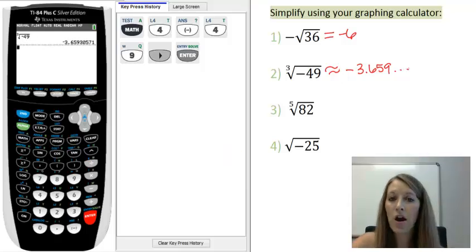Now, it might look like this decimal stops after the 1, but this decimal actually continues on forever with no patterns or no repeating digits. It is an irrational number.